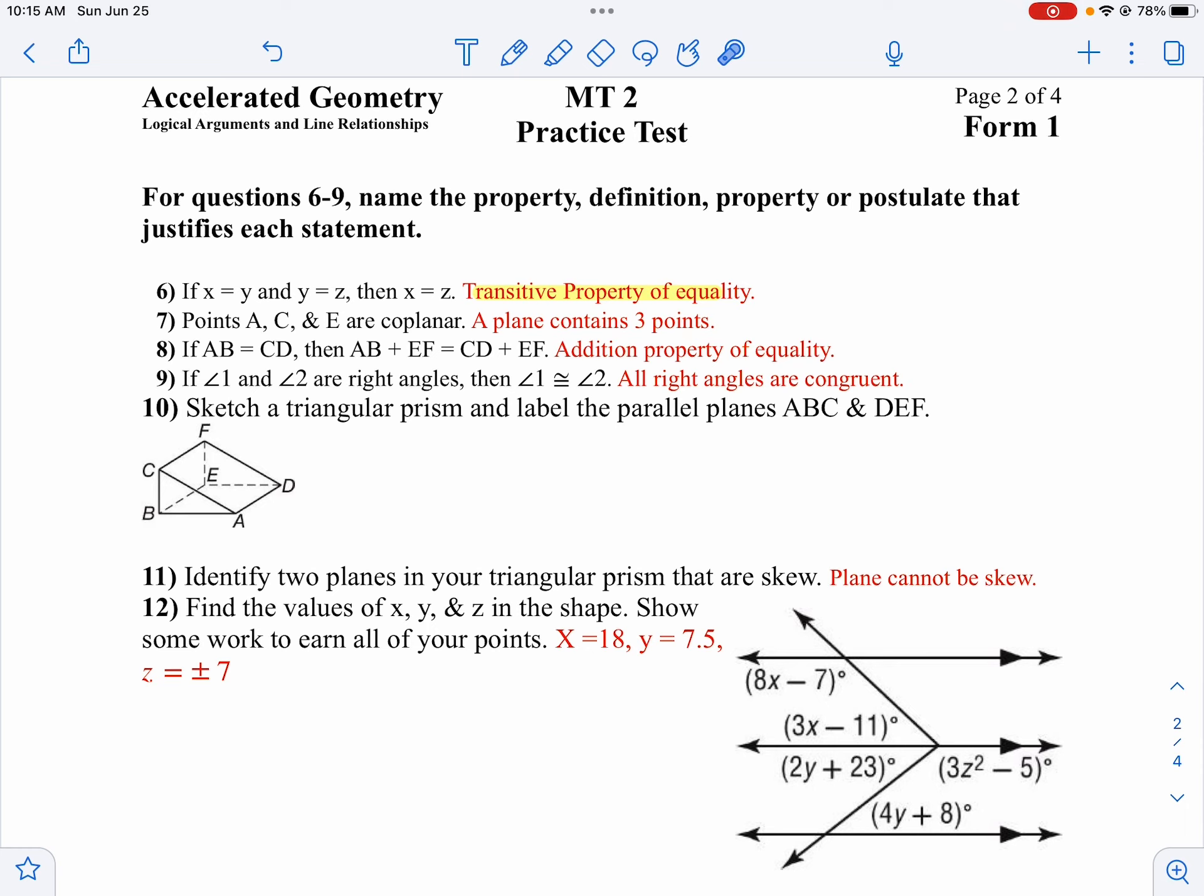On number 7, points A, C, and E are coplanar. From one of our postulates, we know that three points determine a plane.